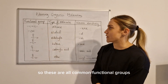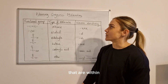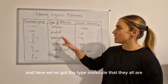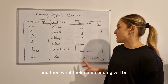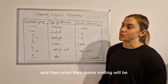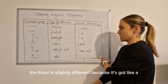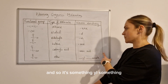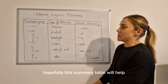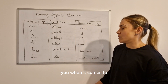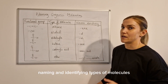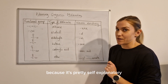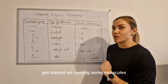These are all common functional groups within the organic or carbon-based molecules that we tend to come across, and here we've got the type of molecule they all are and what their name ending will be. The ester is slightly different because it's got a two-part name. Hopefully this summary table will help you with naming and identifying types of molecules. I'm not going to go through it because it's pretty self-explanatory, so we're just going to get started on naming some molecules.